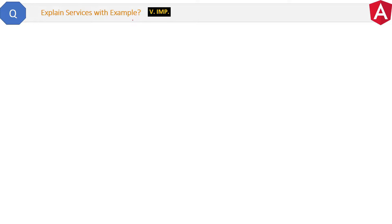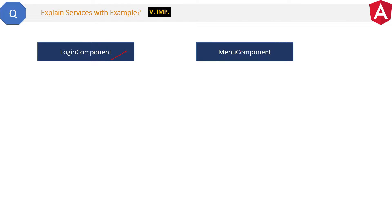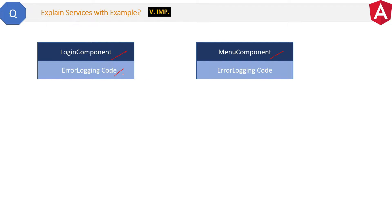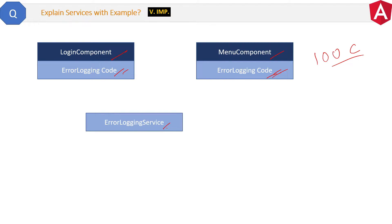Explain services with example. Suppose in our single page application, we have two components — a login component and a menu component. Now if any error occurs in these components, the developer has to log that error. For that, we would have to write some lines of error logging code inside both of these components. So you see, the same code of error logging will be in two places. And if we have 100 components in our application, then we have to place that code in 100 places. To avoid those repeated lines of code, we will create a single service — an error logging service.